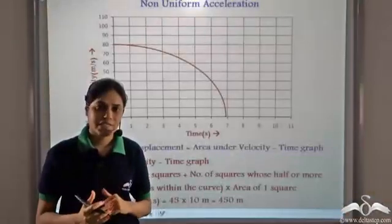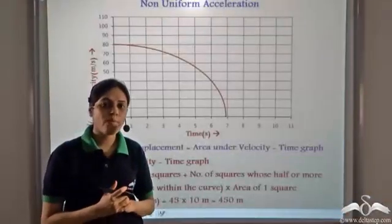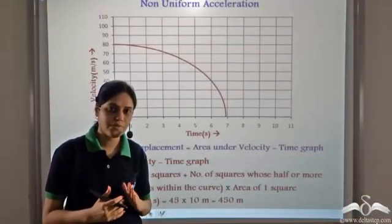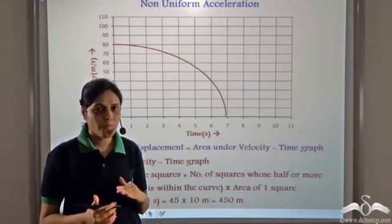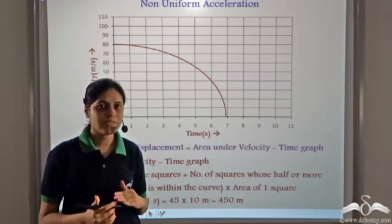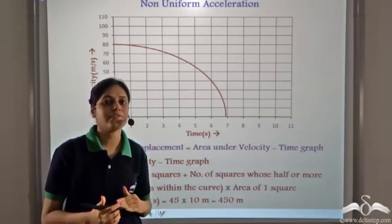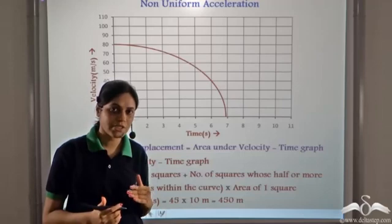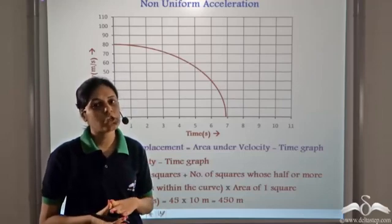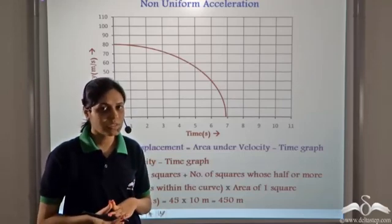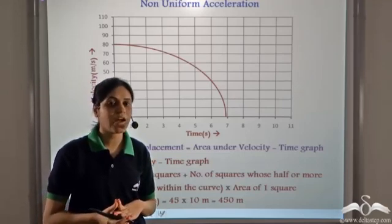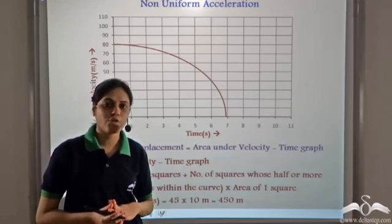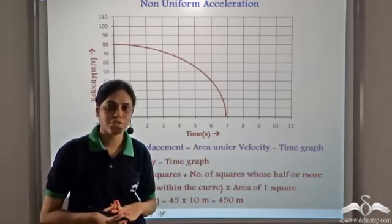The slope of a velocity-time graph gives us acceleration. If the slope is constant — that is, the graph is a straight line — it indicates uniform acceleration. If the slope is not constant — that is, the graph is not a straight line — it indicates non-uniform acceleration.